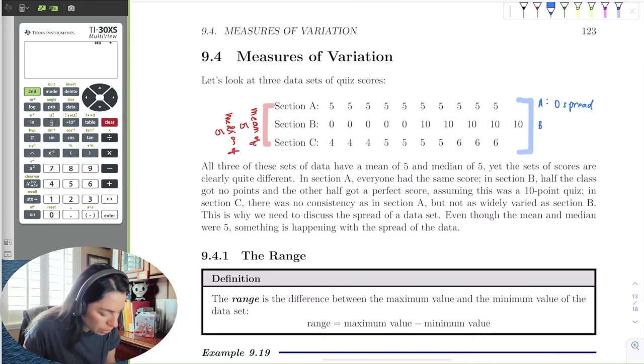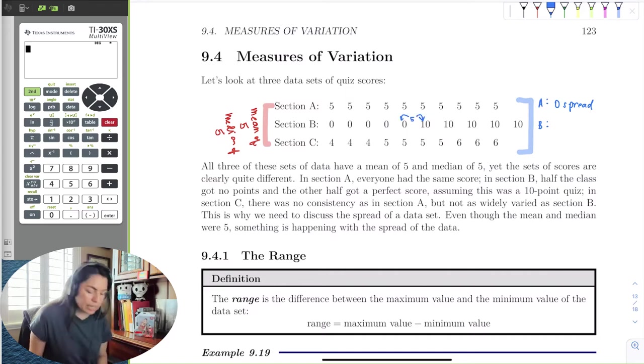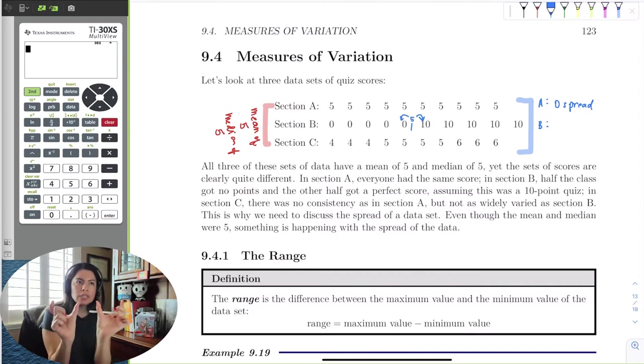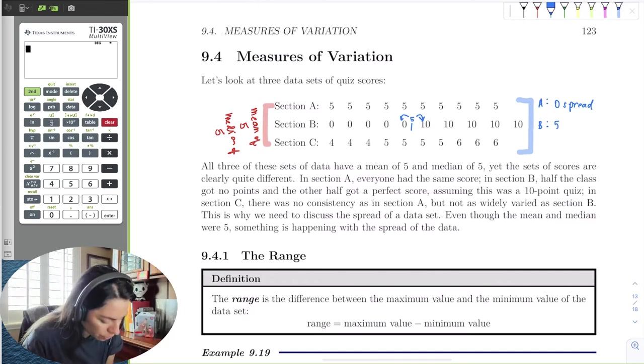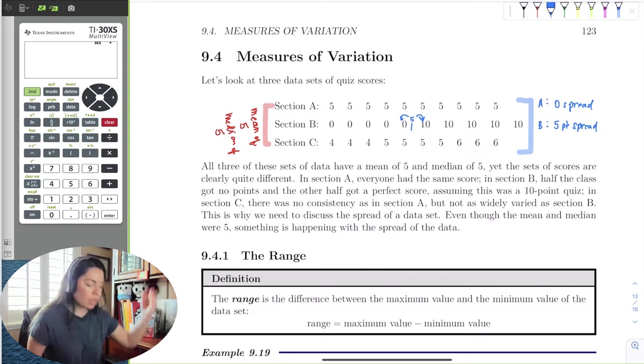What about in section B? If I put 5 here, how far is 5 from 0, and how far is 5 from 10? Well, from 0 to 5 is 5 points, and from 5 to 10 is also 5 points. So wouldn't you say here the spread is going to be 5? So there's a 5-point spread here from the mean.